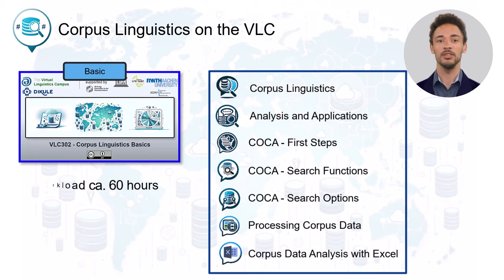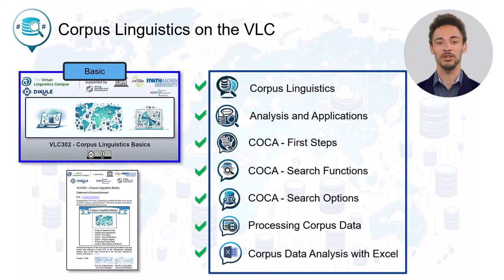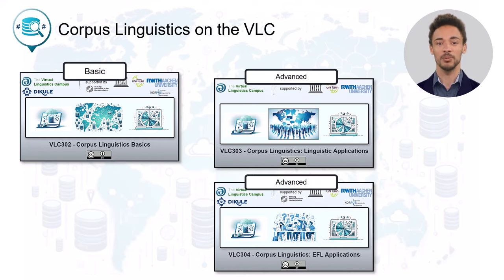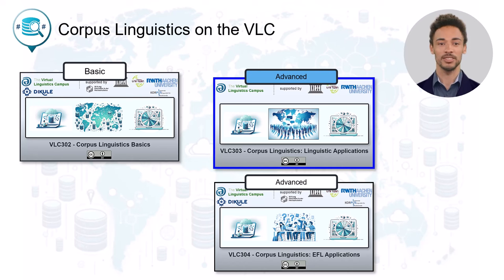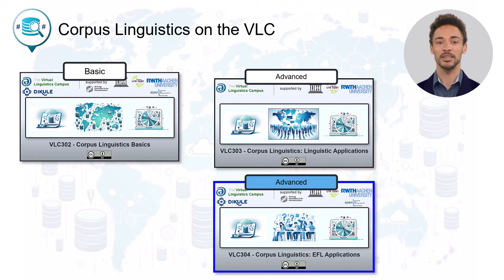Once you have mastered the corpus basics, you have the choice between two specialization courses, each with a workload of 60 hours. VLC 303 covers linguistic applications with a focus on theoretical linguistics, and VLC 304 covers EFL applications, which is particularly suitable for teacher training.